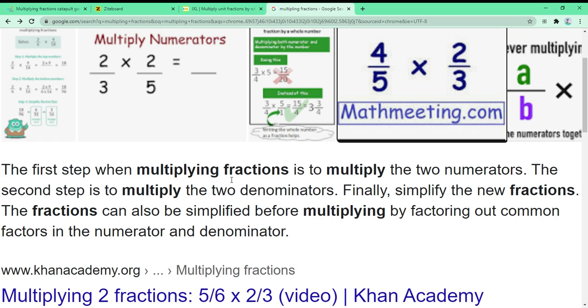The first step when multiplying fractions is to multiply the two numerators. The second step is to multiply the two denominators. Finally, simplify the new fractions.